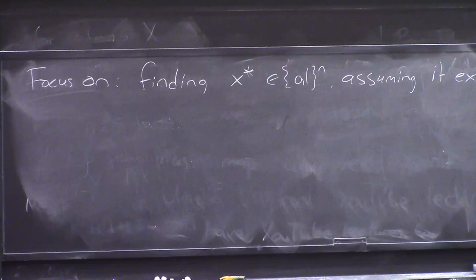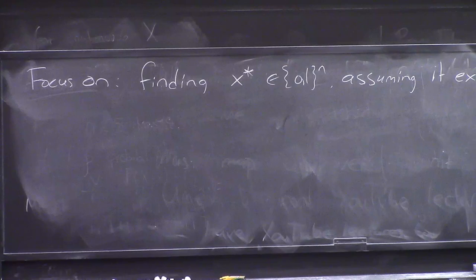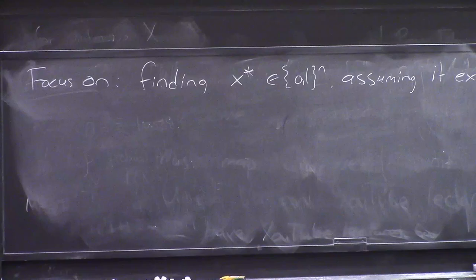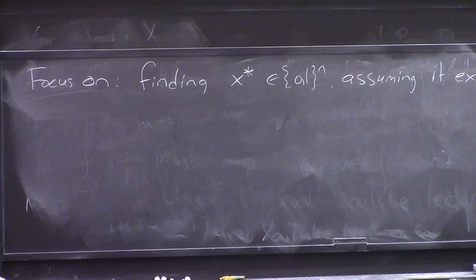So finally, the problem boils down to: I give you a Boolean circuit with N inputs — think of N as 1,000 — one output, and I promise you there's exactly one string from among the 2 to the 1,000 input possibilities that makes this circuit output 1. Please find it. The brute force algorithm of trying strings until you hit x-star takes time 2 to the N times poly N. Grover's algorithm is going to do it in root 2 to the N times poly N time.